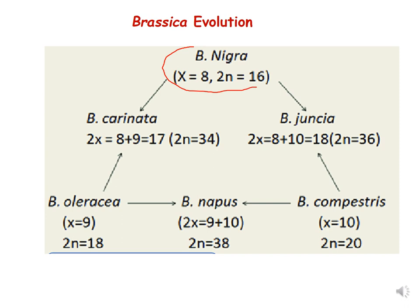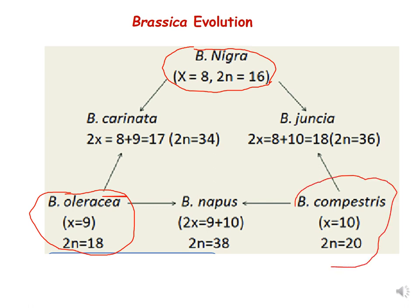Looking at this flowchart, Brassica nigra is a diploid plant with 2n = 16. Brassica oleracea is also a diploid plant with 2n = 18 chromosomes. Brassica campestris is also a diploid plant with 2n = 20 chromosomes.